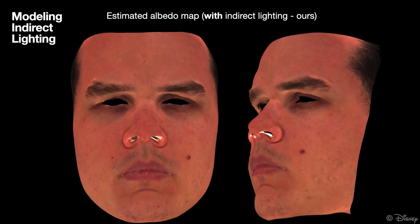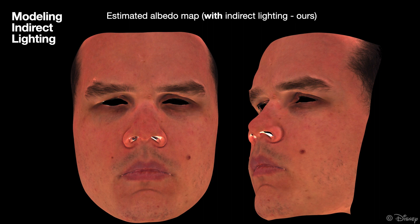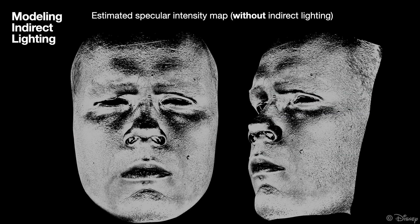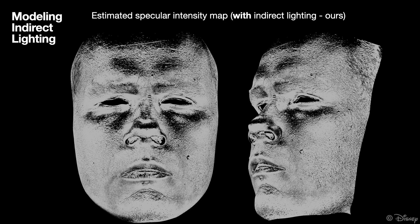We extend the baseline algorithm to account for indirect lighting, using a novel and efficient texture space technique for inverse rendering optimization. As a result, the estimated albedo map becomes free of artifacts that are seen on the baseline result, where the albedo values overshoot near face concavities to compensate for missing indirect light. We also found that in face concavities, such as eye sockets, sides of the nose, and along closed lips, the specular albedo values cannot be recovered using only direct lighting, since no direct specular reflection is seen on those areas. Simulating indirect bounces of light in these face concavities once again helps improve results, this time by adding new constraints on specular albedo.